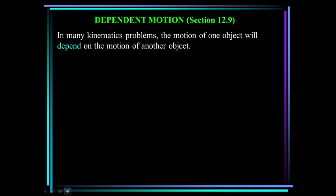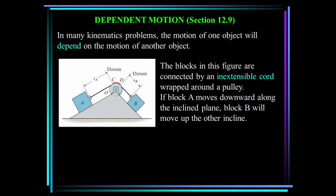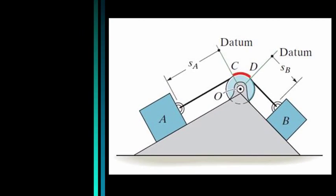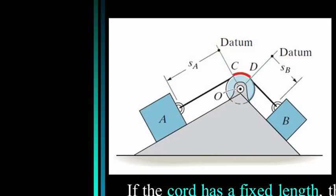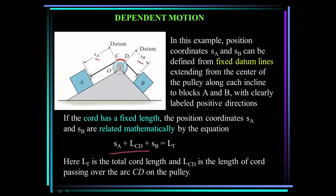In many kinematic problems, the motion of one object will depend upon the motion of another object. The blocks in this figure are connected by an inextensible cord wrapped around a pulley. If block A moves downward along the inclined plane, block B will move up the incline. Position coordinates SA and SB can be defined from fixed datum lines extending from the center of the pulleys along each incline to blocks A and B, with clearly labeled positive directions. If the cord has a fixed length, SA and SB are related by the equation SA plus LCD plus SB equals LT, where LT is the total cord length and LCD is the length of the cord passing over the arc CD on the pulley.